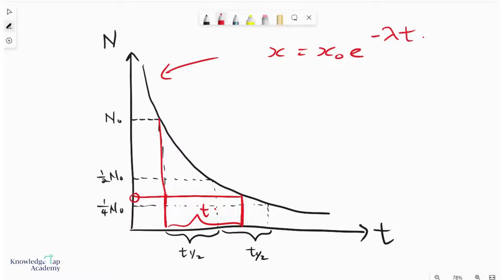where x is a pseudo-variable. So it can represent a number of things. And some of these things that it can represent would be N, of course, the number of undecayed nuclei, A, the activity. These are the two common ones.